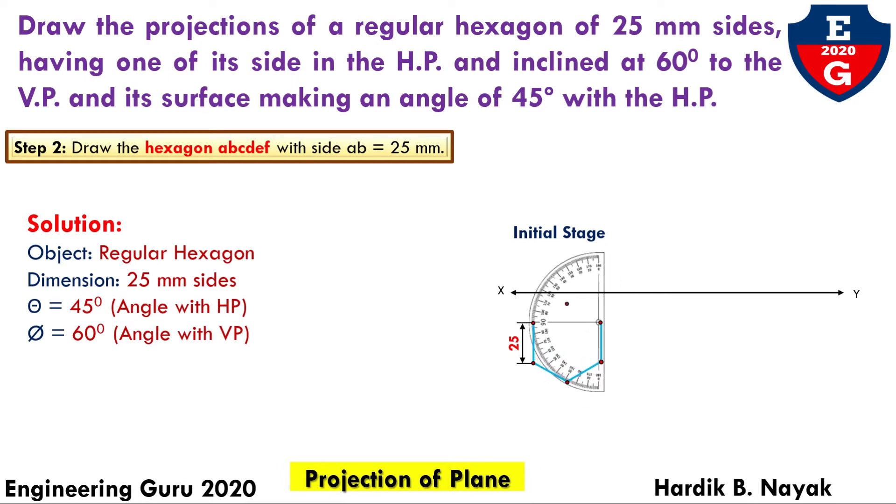With the help of a protractor, draw all the lines at 60 degrees and denote the points A, B, C, D, E, and F. Now, step number three.